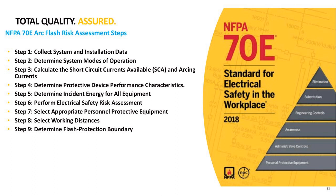NFPA 70E basically says there are nine steps to perform an arc flash risk assessment. Step one: collect the system data. Step two: determine the system operating modes — very important for DC systems. Step three: calculate the short circuit currents available and arcing currents. Step four: determine the protective device performance characteristics, which is why I showed the time current curve. Step five: determine the amount of incident energy. Step six: perform the risk assessment, since you need to know what the incident energy is before looking at boundary conditions. Step seven: select appropriate PPE and working distances, then determine your arc flash boundary.